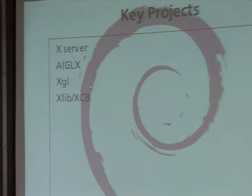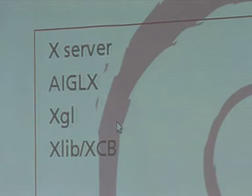We have a bunch of stuff going on. Some of our key projects are, obviously, we're continuing to work on the X server — there's a whole bunch of little projects going on inside there. And then there are some special projects people may have heard of: AIGLX and XGL. I wanted to talk about the difference between those two, and also some recent work in XLib and XCB.